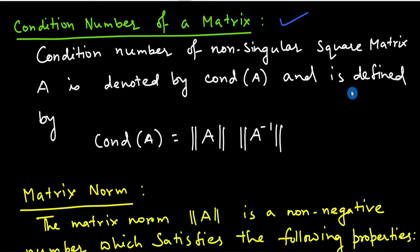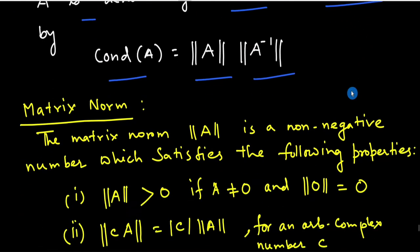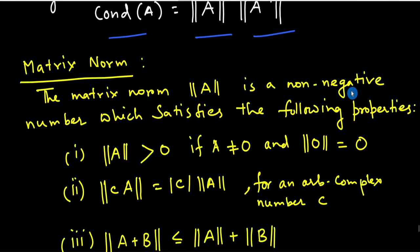First we read the definition of condition number. The condition number of a non-singular square matrix A is denoted by cond(A) and is defined by: cond(A) = norm(A) × norm(A inverse). Now we will first define the matrix norm needed for this condition number.